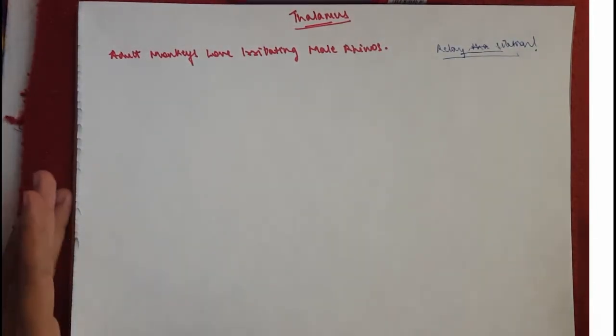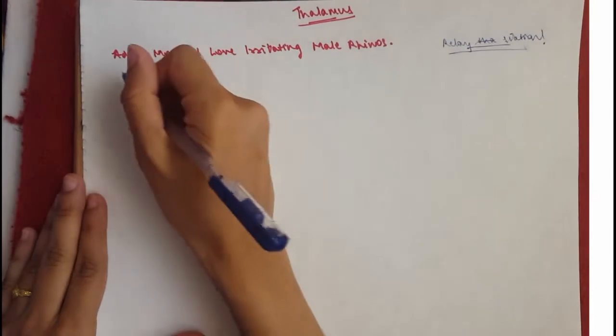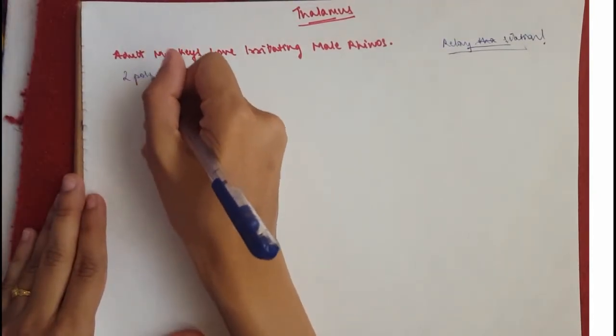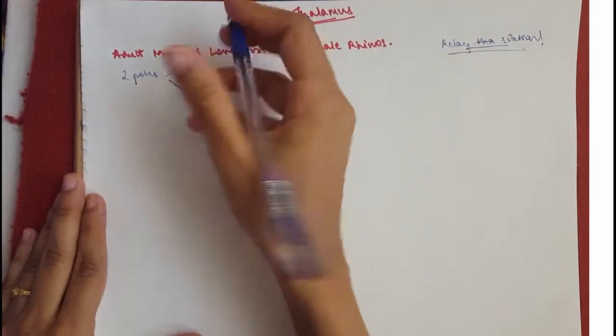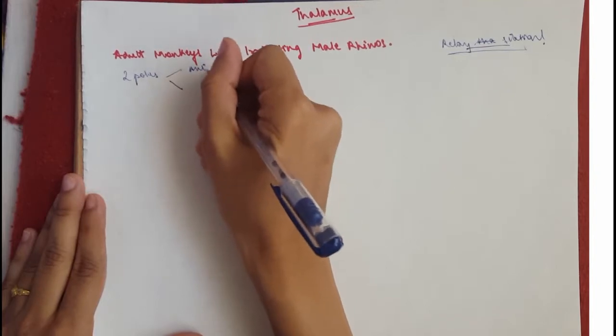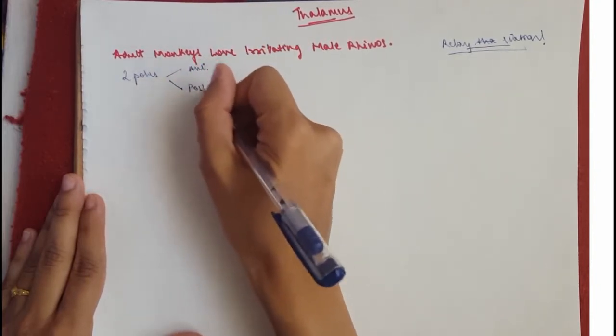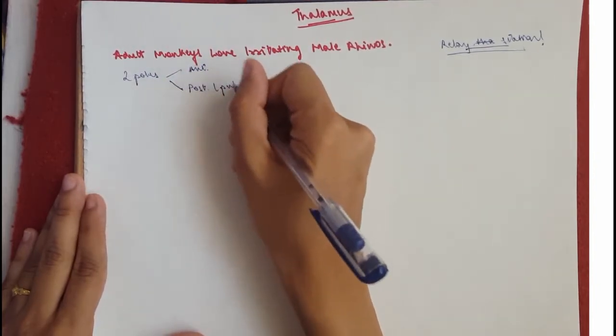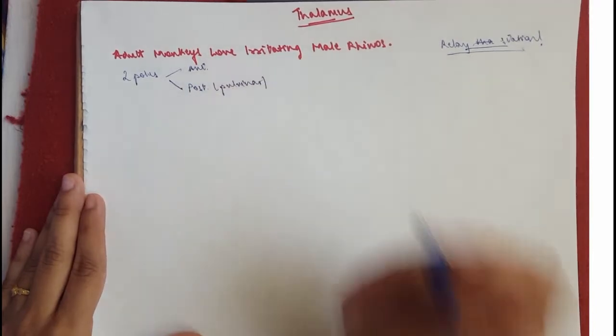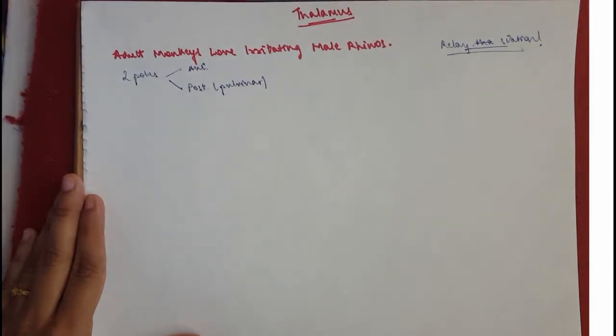Sensory motor functions, all of that. So it's got two poles which you need to know, this is just general information. It's called the anterior pole and the posterior pole. The posterior pole is also called the pulvinar and it's got a function which I'll tell you in a bit.